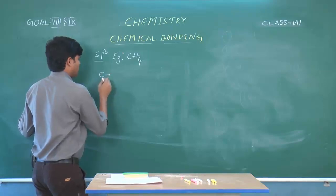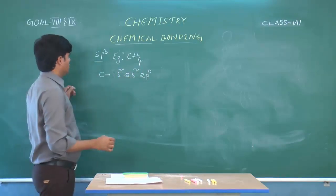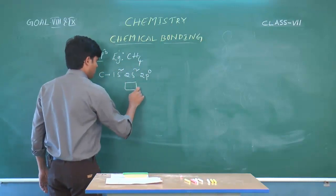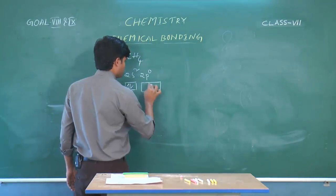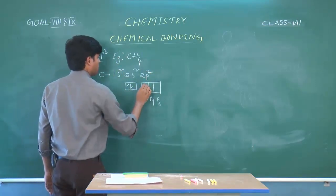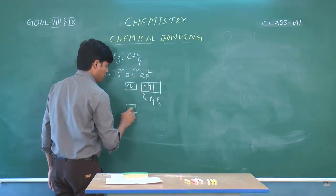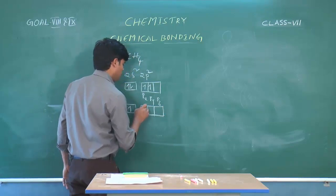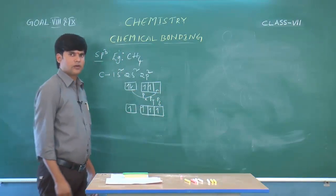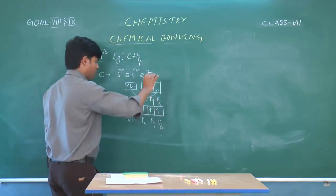The central atom carbon has electronic configuration 1s², 2s², 2p². Here, excitation of an electron is needed. So one electron from 2s² is excited, giving 2s¹, and 2p orbitals become px¹, py¹, pz¹ — resulting in 4 unpaired electrons across 2s, px, py, and pz.